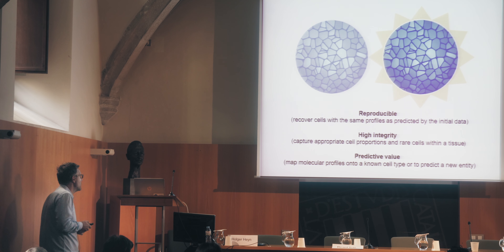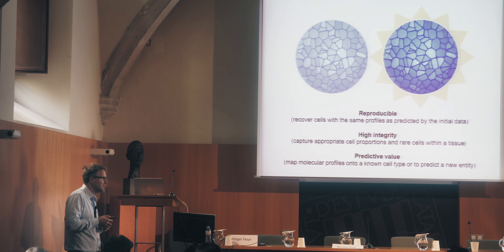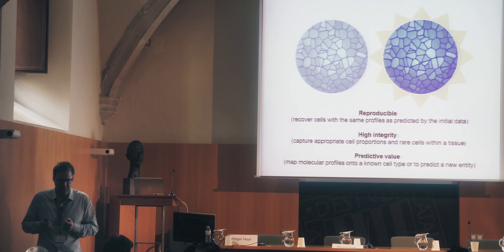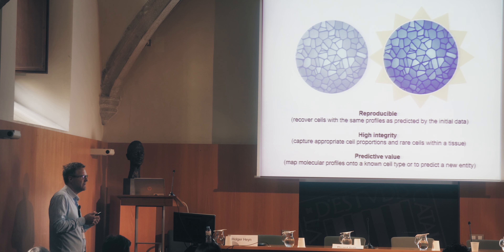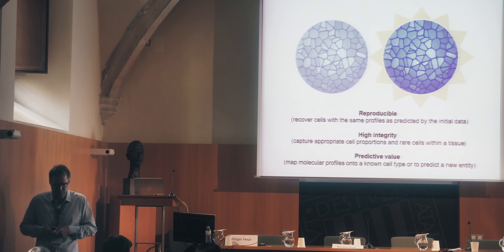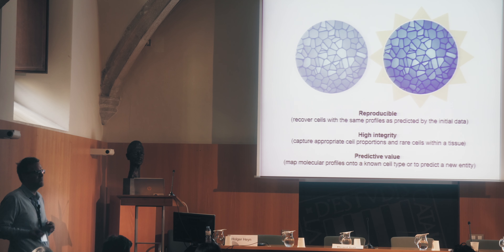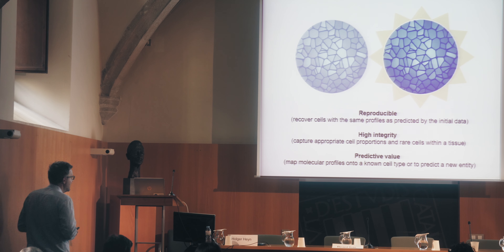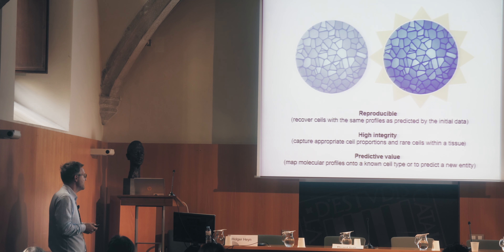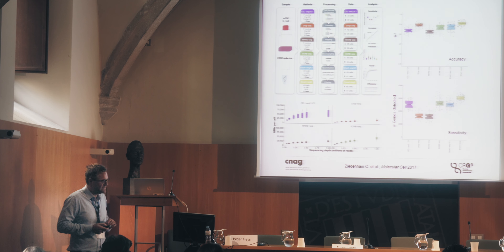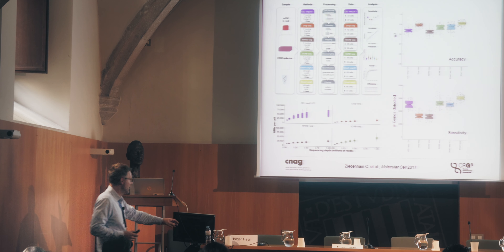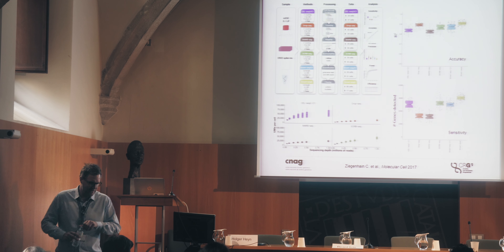The overall goals are to produce an atlas that is reproducible; high-integrity, meaning comprehensive enough to identify rarer cell types and more subtle states present in tissues; and predictive, meaning the future cell atlas can serve as a reference to identify differences in cell composition, cell stages, states, and expression profiles. All of this started when we initially and systematically compared single-cell RNA sequencing techniques.